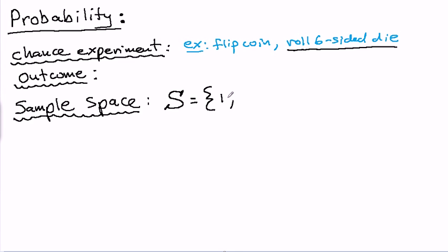One is one possible outcome. Two is another possible outcome. Three, four, five, and six. These are all the possible outcomes of this chance experiment. And so that's the sample space.